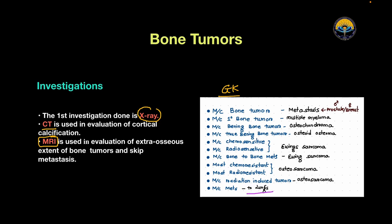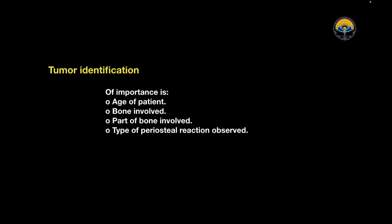These are all one-liners for your PG preparation. Now, the important thing is how to diagnose or identify a tumor. There are four important points: first, the age of the patient; second, the bone involved; third, the part of the bone involved; and fourth, the type of periosteal reaction observed. These are the key points to identify bone tumors.